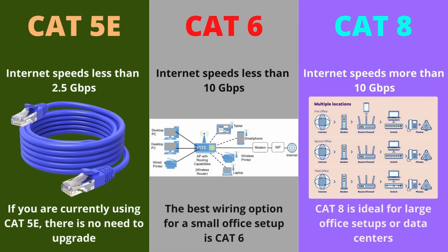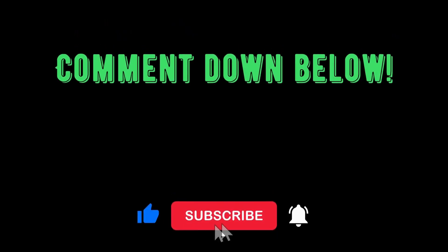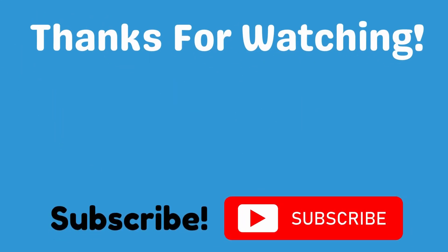In summary, for network upgrades, unless you are upgrading to more than 2.5 gigabits per second internet, Cat 5e should continue to work just as well as Cat 6 or Cat 8. However, Cat 6 and Cat 6A cables still get our personal recommendation. I'm also planning a 10 gigabit per second test to check network adapters and Ethernet cables, so make sure to hit that subscribe button. If you enjoyed this video, drop a like and comment below which Ethernet cable you're planning to purchase. Thanks for watching!